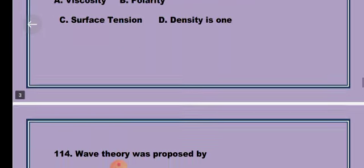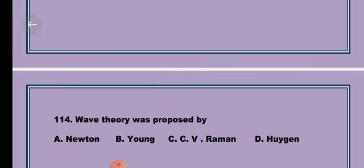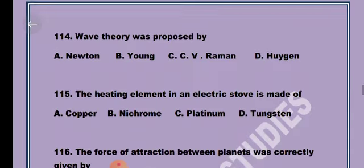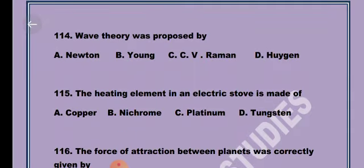Next question. Wave theory was proposed by Christian Huygens, Option D, Huygens. Question 15. The heating element in an electric stove is made up of Option B, Nichrome.